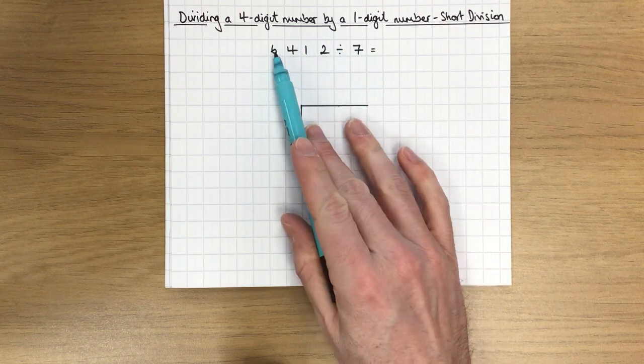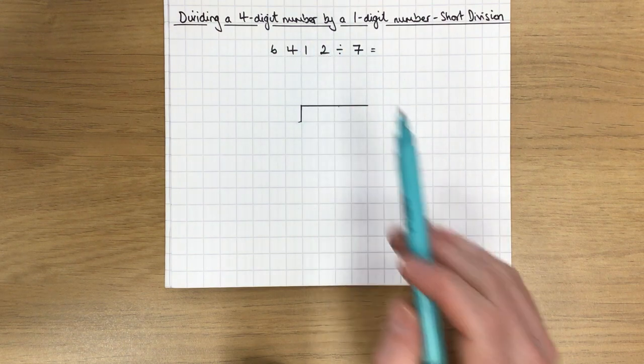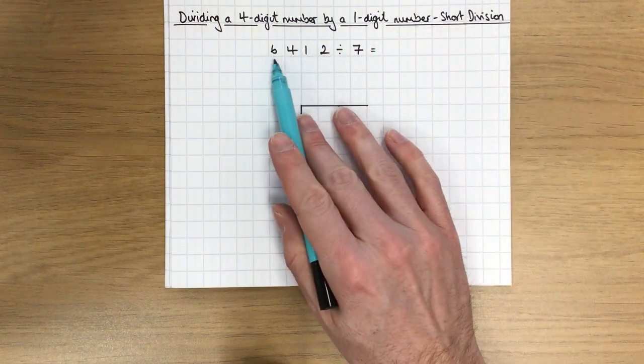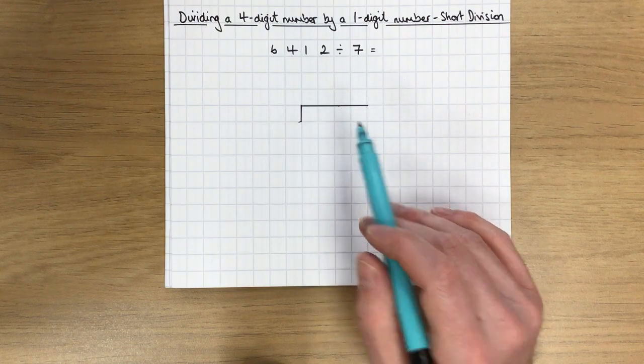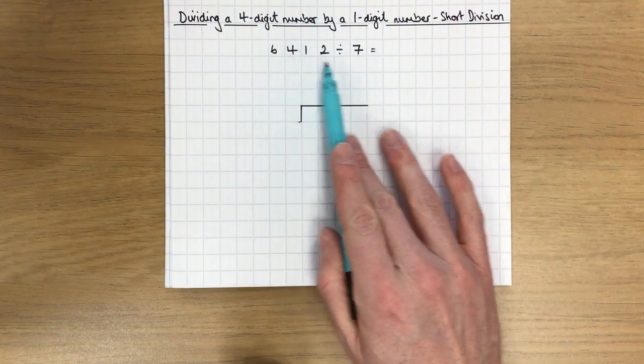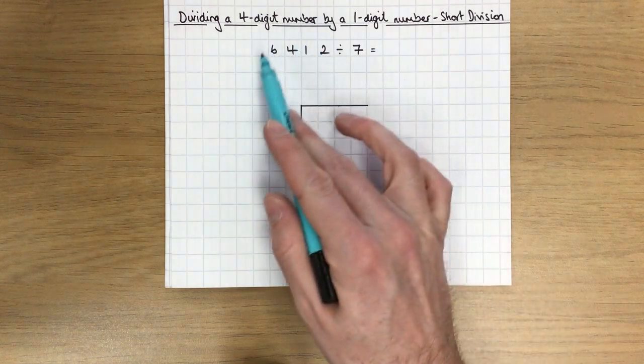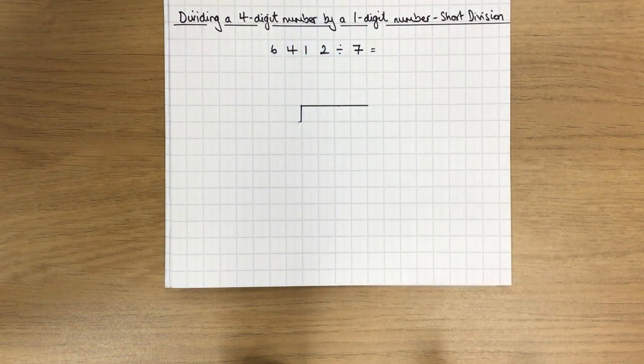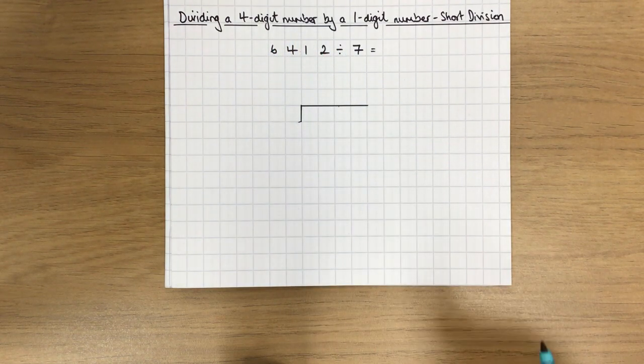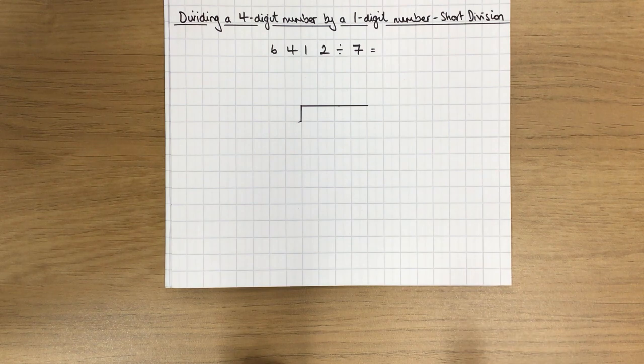7 goes into 7,000 a thousand times. I know that 7 goes into 63 nine times, so 7 into 6,300 would be 900 times. I'm thinking my answer is going to be just a little bit more than 900, somewhere between 900 and 1,000.